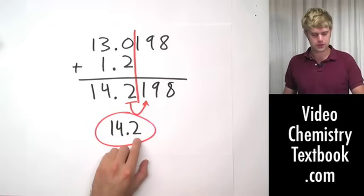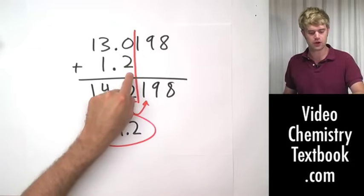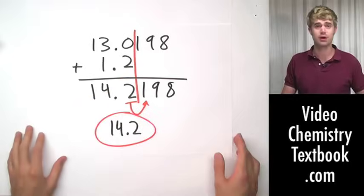That means my final answer is going to be 14.2. It has one decimal place and the number I started with, with the fewest number of decimal places, also has one. So that's how I know I did it correctly.